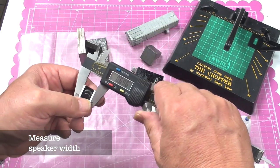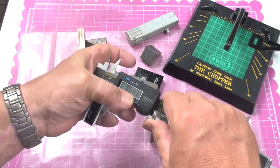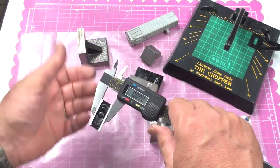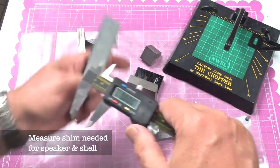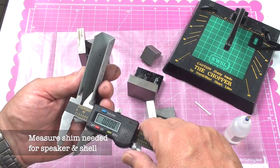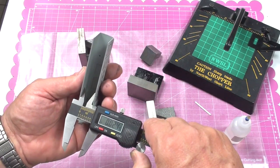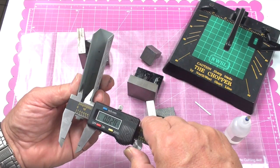Now the next step is going to be to figure out what we have to do to make the speaker wide enough to fit in the shell. We measure the speaker width and zero the calipers on that. Then when we measure the shell width, the difference in those, or about 20 thousandths, is how wide we have to have the shim.